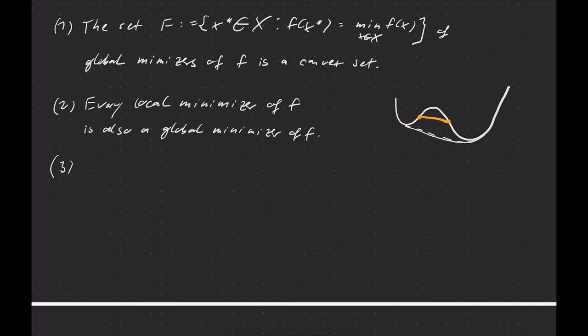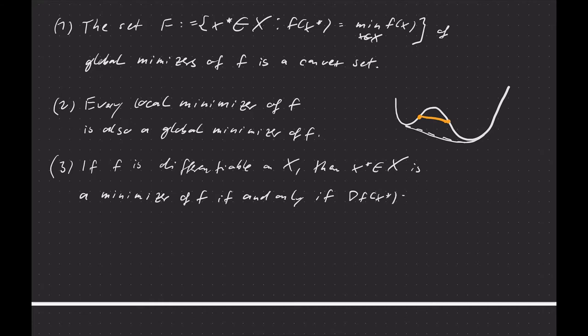Third property, if f is even differentiable, then we can find the minimizers simply by looking at stationary points. Because by convexity every stationary point is automatically a minimum. So if f is differentiable on X, then a point x* ∈ X is a minimizer, local as well as global, of f if and only if the gradient of f at x* is zero. And as I said, because of convexity, we cannot have local maxima and we cannot have saddle points as well.